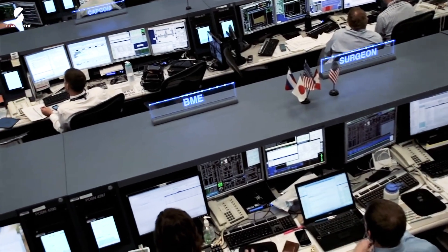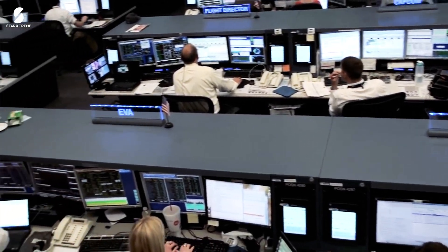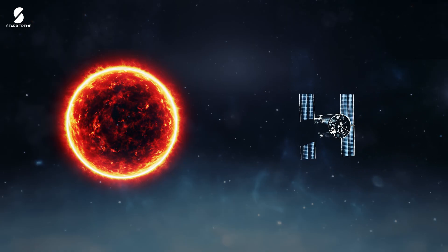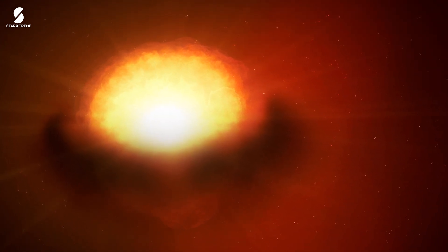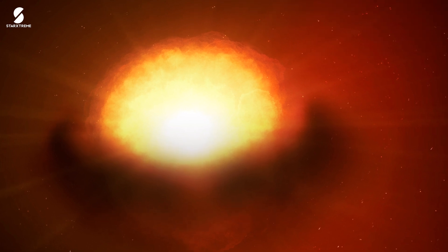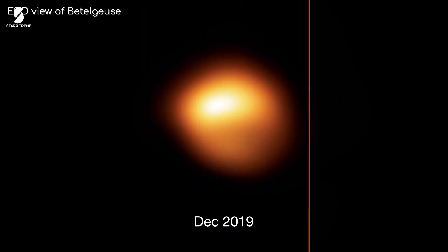This sparked speculation and curiosity among scientists worldwide. Several theories emerged to explain Betelgeuse's dimming, but one possibility stood out and was later found to be correct by the Hubble Space Telescope. Based on Hubble's data, scientists found that the star ejected a massive cloud of dust, partially obscuring its light from our view. However, the star last dimmed in February 2020 and has since not repeated its cycle.